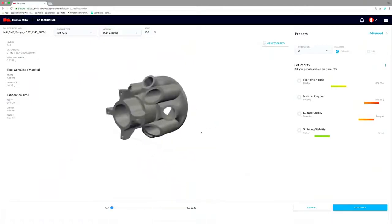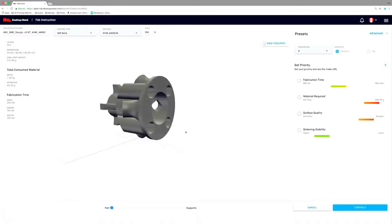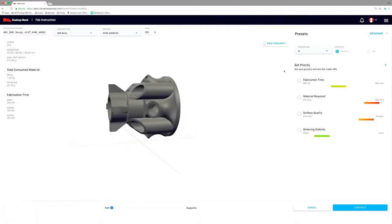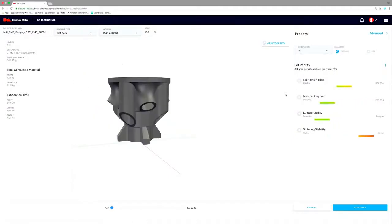Fabricate software constructs build plans from STL or native CAD files. Based on user-defined parameters, material, and part geometry, Fabricate automatically adjusts the design for part shrinkage, constructs advanced support, and determines optimal orientation.